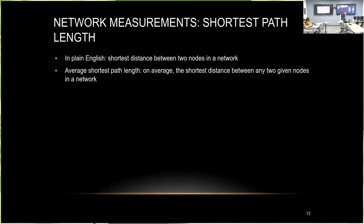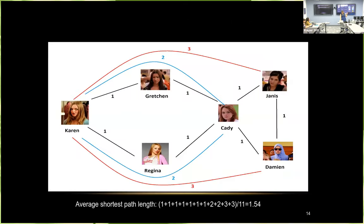So in this case we find the network has a mean degree of 2.3, which in practice means on average each person has 2.3 connections to someone else in the network. Another measurement is the shortest path length — the shortest distance between any two nodes in the network. You can also get the average shortest path length for the entire network. For this network that's 1.54, meaning on average each person is 1.54 people removed from any other person — a bit like the old game Six Degrees of Kevin Bacon.